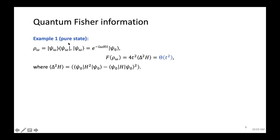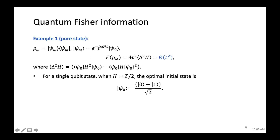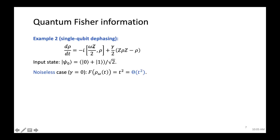The first concrete example is a pure state |ψ(ω)⟩, where ω is encoded in a Hamiltonian evolution H = ω·h with probing time t. The QFI is 4t² times the variance of h on |ψ⟩. To maximize this, we choose a superposition between the maximum and minimum eigenvalue states. For a single qubit with Pauli-Z Hamiltonian, the optimal initial state is the superposition of |0⟩ and |1⟩.